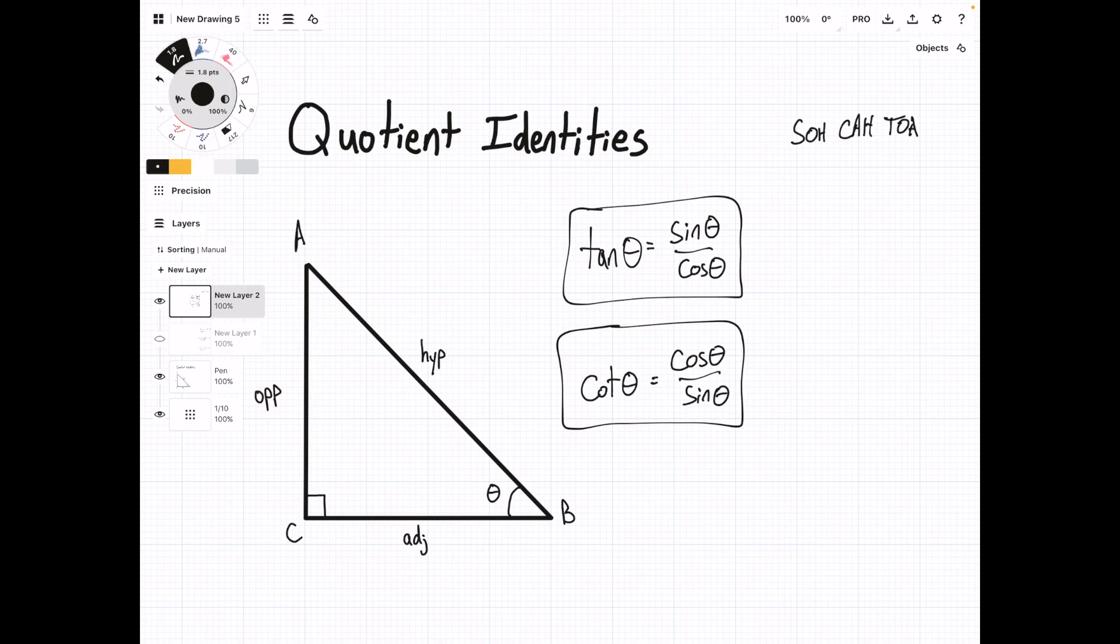So we have our right triangle here, and we know that sin θ equals opposite over hypotenuse, and cos θ equals adjacent over hypotenuse.